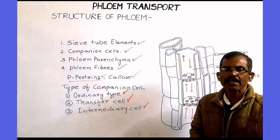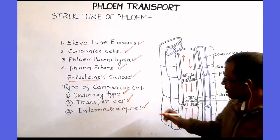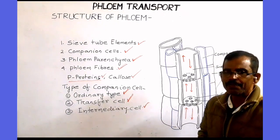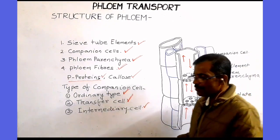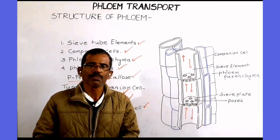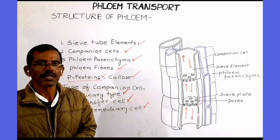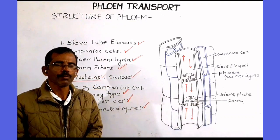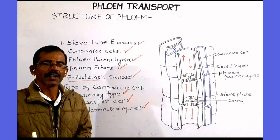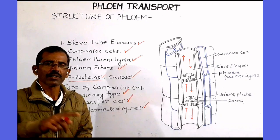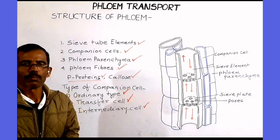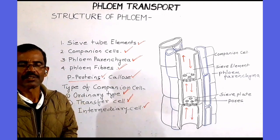The third type of companion cell is the intermediary cell. Intermediary cells have numerous plasmodesmatal connections both with the sieve tube elements and also with the surrounding cells, particularly the bundle sheath cells.